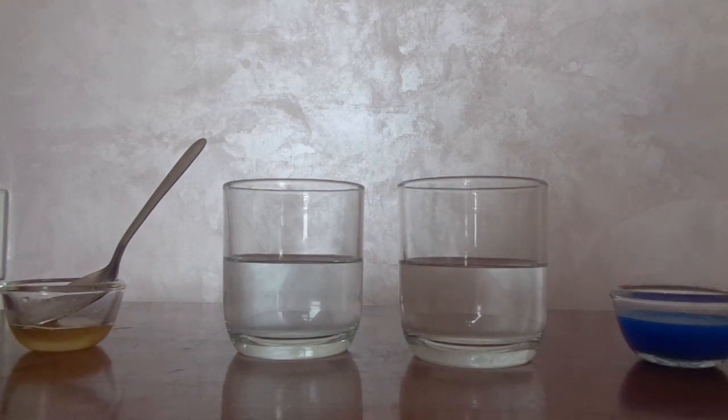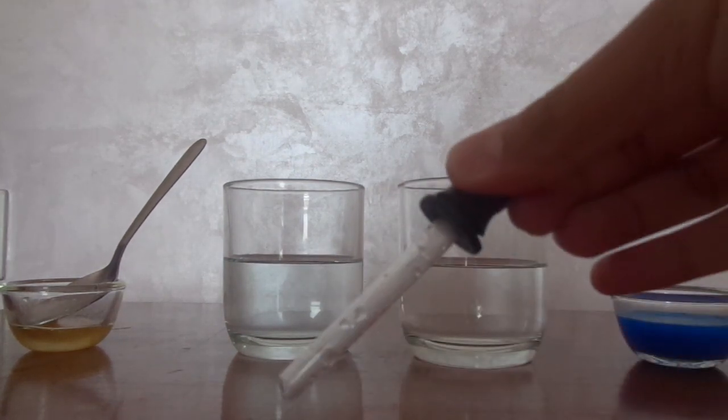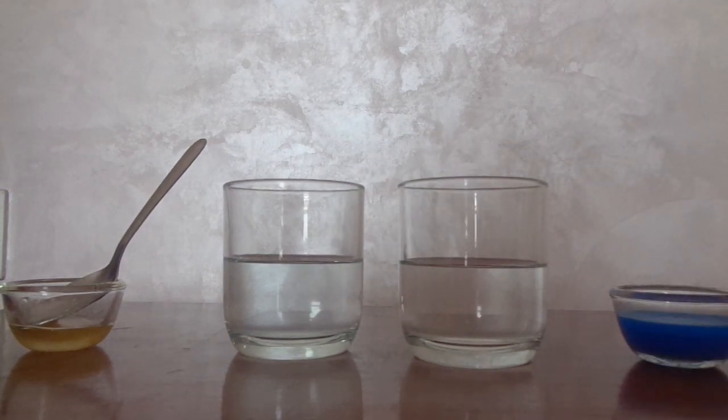So here I have some honey and on the right I have some ink. For this experiment you can use a syringe or a dropper. I will be using a dropper because it's much easier to show the activity.